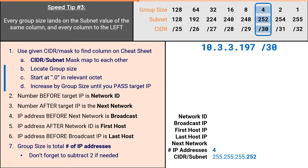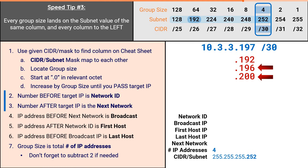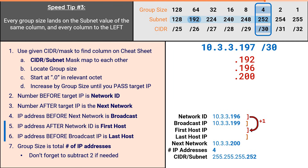Speed tip number 3 is that every group size increment will eventually land on its own subnet mask value, or every subnet mask value to the left. Which means our increment of 4 will at some point land on 252, or 248, or 240, and so on. All we then have to do is define the closest value to our target IP, which for us is 192. So we'll start at .192 and continue incrementing by our group size of 4, to get us to .196, then .200, and here we have passed our target IP of 197. We've done the hard part, and we can now fill in all the remaining values. .196 and .200 are our network ID and next network, .199 is the broadcast IP, and .197 and .198 are our first and last host IP.